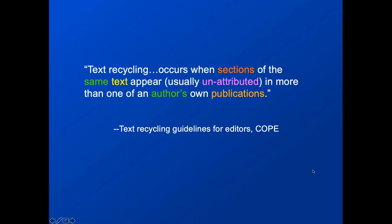Then there's the question of what counts as 'text'—are we talking about just prose, or also equations, figures, tables, or other visuals? There's also the matter of attribution. If we define text recycling by the absence of a citation—that is, when you reuse your own work without citing it—what do we call it when you're reusing it and citing it? And importantly, a citation doesn't tell readers anything about the presence or absence of text recycling. Authors will usually cite their own prior relevant work whether or not they're recycling text from those papers.